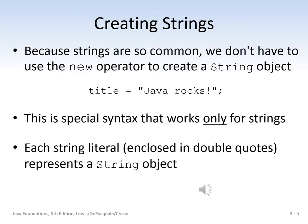In the previous slide, we said we typically use the new operator. But because strings are so common, we don't have to use the new operator to create a String object. This is a special syntax that works only for strings. Here is an example: title equals and then you include the string between double quotes. The text or characters enclosed in the double quotes are called a string literal, and they represent a string object.